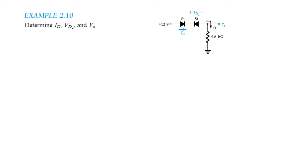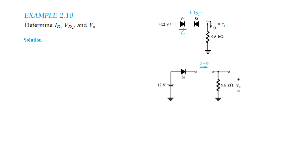Example 2.10: we have two silicon diodes, but one is in the opposite direction. The first diode is forward biased because of the 12V positive terminal. The second diode is reverse biased because the positive voltage is touching its negative terminal. Since one diode is reverse biased, the circuit is open circuit.